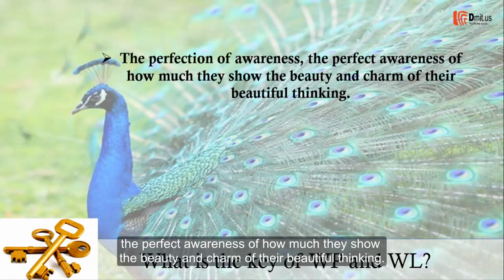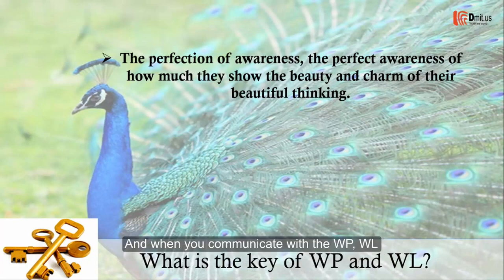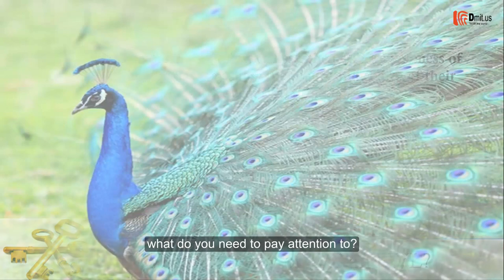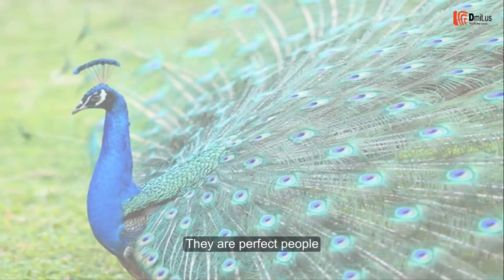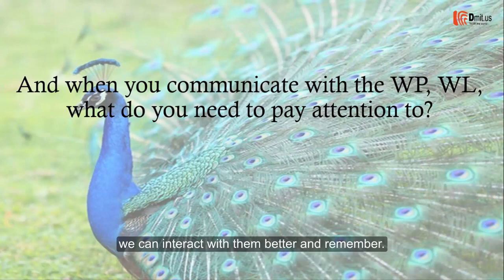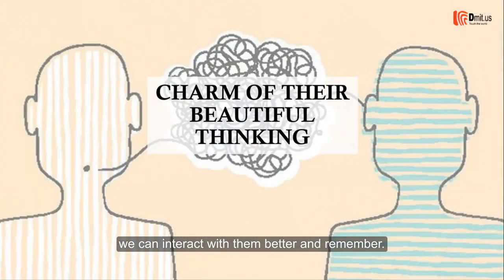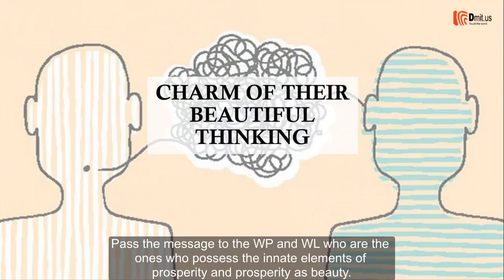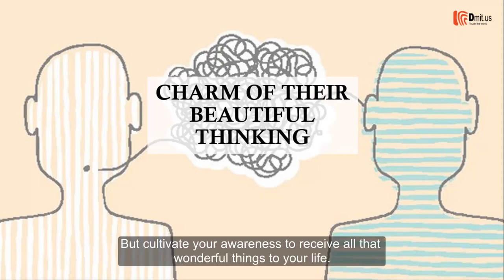Perfection here means the awareness of how much they show the beauty and charm of their beautiful thinking. When you communicate with WP and WL people, you need to pay attention: they are perfection-oriented people. Our words for them should use beautiful words and beautiful thinking to interact with them better. Remember to pass the message to WP and WL: you possess innate elements of prosperity and beauty, so cultivate your awareness to receive all those wonderful things into your life.